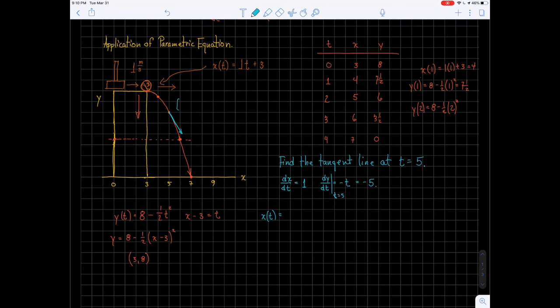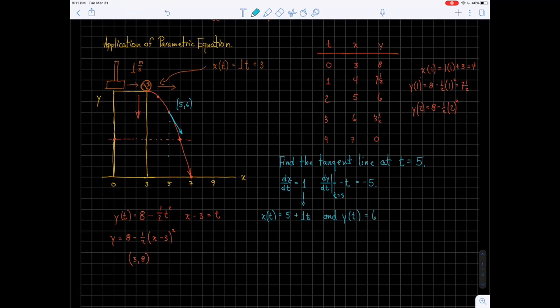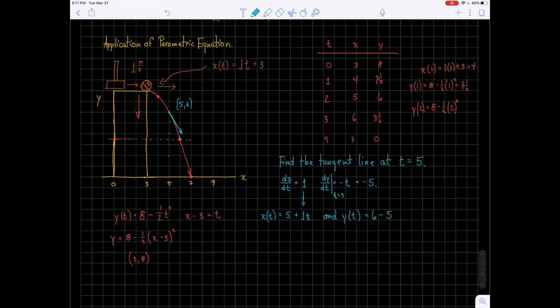we can write our equation as x of t equals its starting value. Well, its starting value is this point. This point was 5, 6. So x started at 5. It has a slope of 1 times t. And y of t starts, y starts at 6, but it has a slope of minus 5 times t.